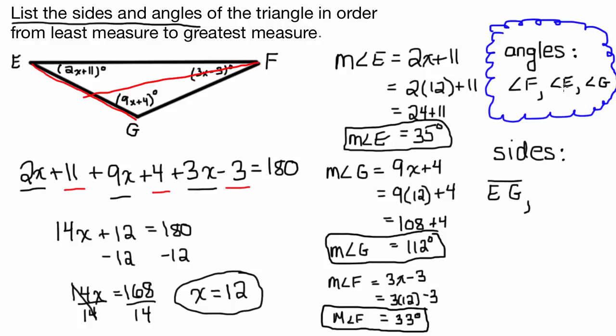And then the next smallest angle is angle E. So if I use a different color and I say, OK, what side's opposite angle E? Hits right here. And that's going to be side GF. And then the largest side is going to be opposite the largest angle, which is angle G. So I look at angle G right here and I go opposite it and I see side EF.